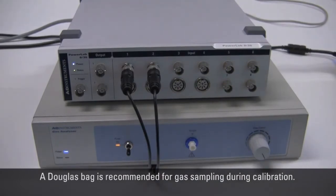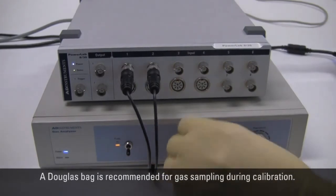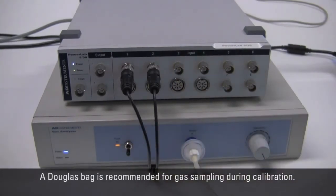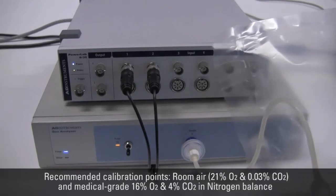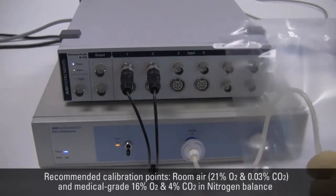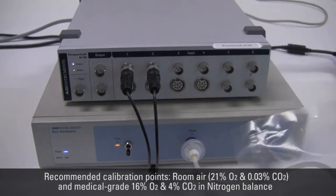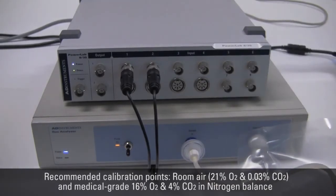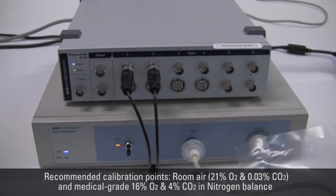The carbon dioxide and oxygen transducers can be calibrated using two gas samples with known O2 and CO2 concentrations. The first can be room air, which has O2 content of 21% and CO2 of 0.03%. The second gas should have O2 content between 5 to 21% and CO2 greater than 2%.